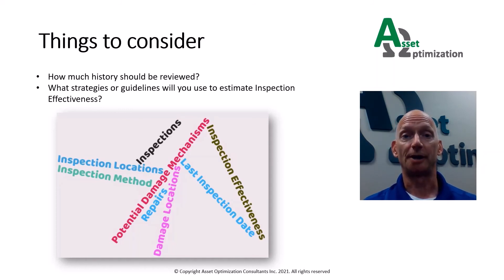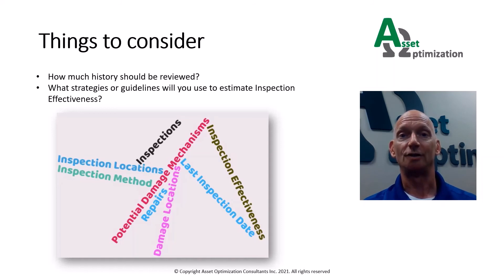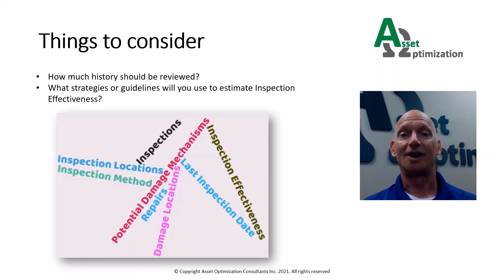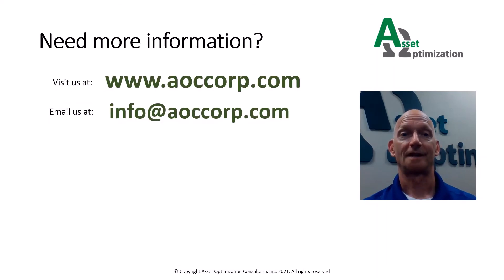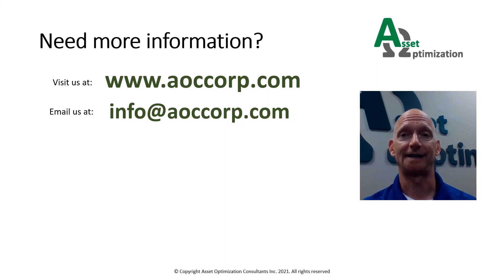Since it is used to determine probability of failure, inspection effectiveness needs to be consistently and accurately estimated. It is important that you utilize defined inspection strategies or effectiveness tables for this purpose. Examples of these effectiveness tables are presented in API 581. If you would like more information on this topic or other asset integrity topics, please visit our website or email us.